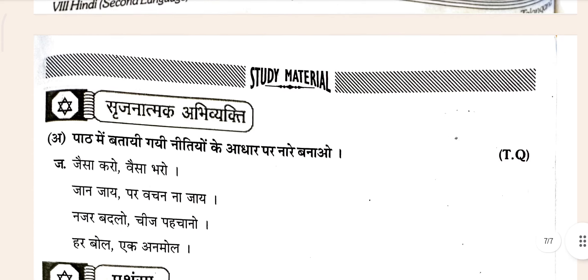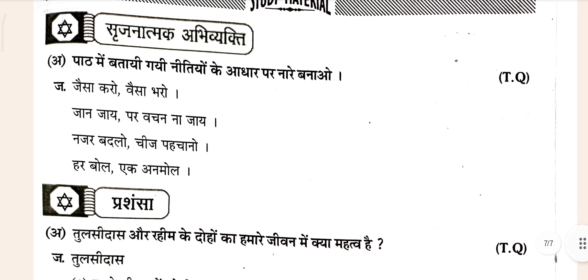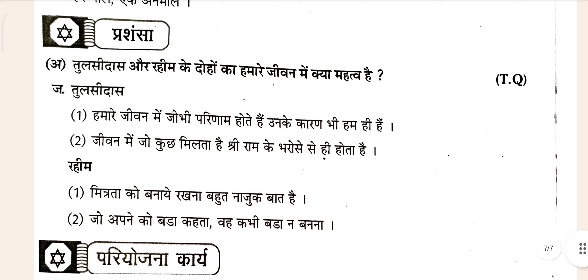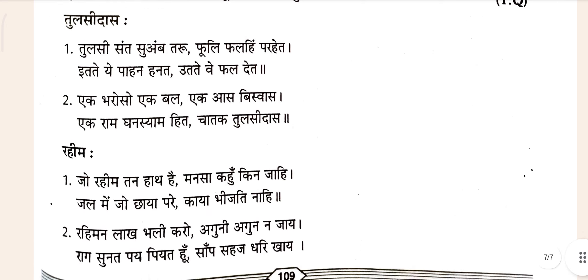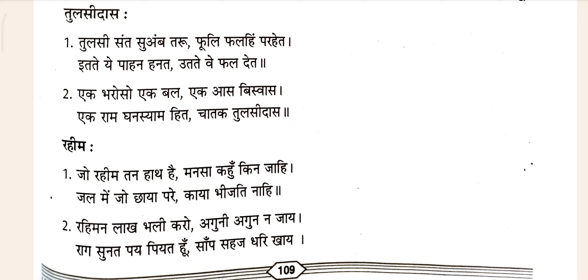Next is the Suzanaatmak Abhivakti section, then after that there is Prasansa, and also a provision card is given. I hope this is all very clear for you. Whatever is in this chapter is totally completed here. I hope this video is going to be very helpful for you. Please don't be confused anywhere — whenever you get confused, just match with your textbook. We will meet in the next video. Jai Hind!